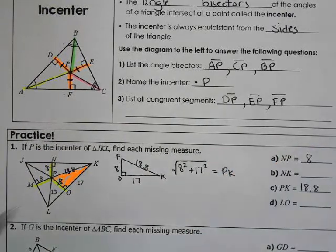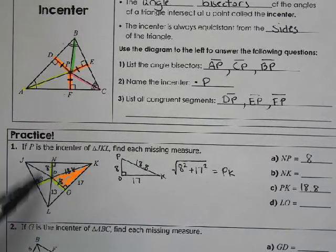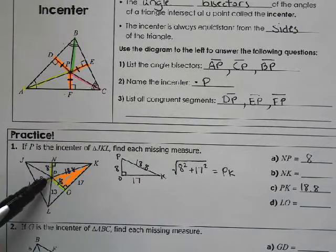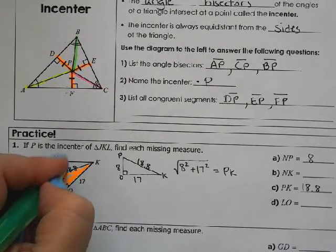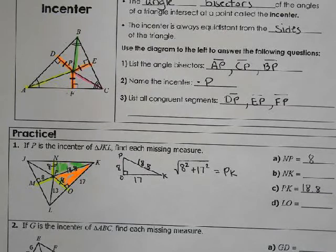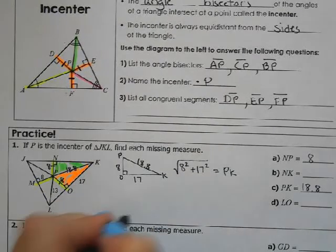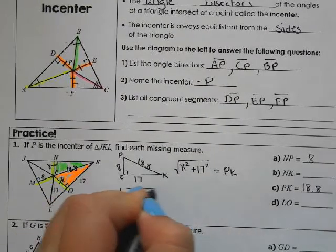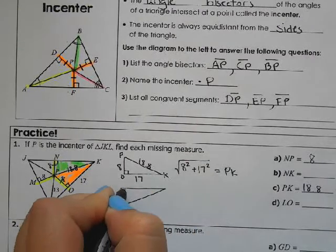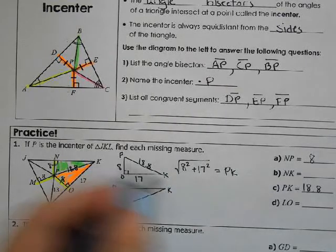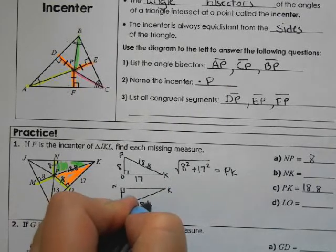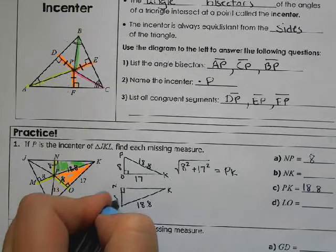Now we want NK. So we have triangle PNK. Let's highlight that one in green. And I'm going to draw it upside down just like it looks. So PNK. PK I know is 18.8. And PN is 8. And I don't know NK.